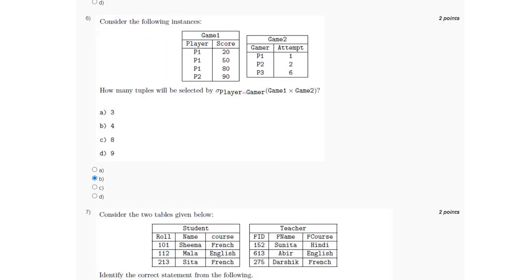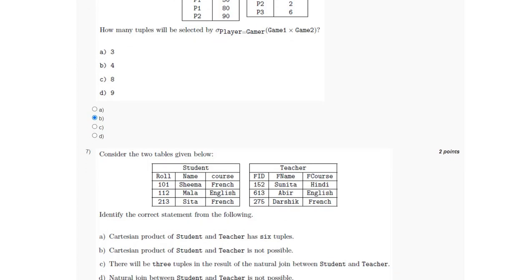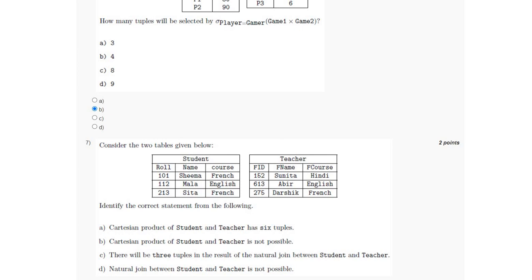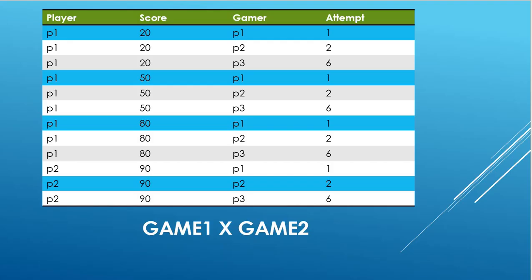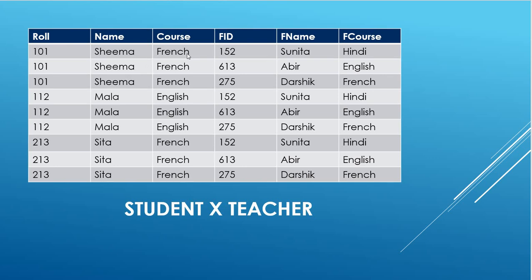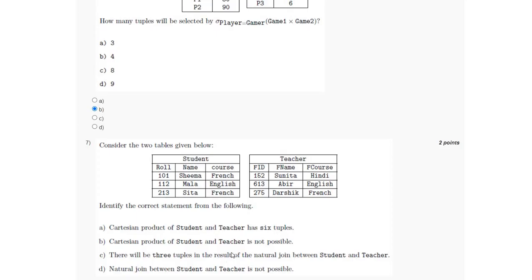For the next question, we have to identify the correct statement. The Cartesian product is possible, but the natural join between the student table and the teacher table is not possible because natural join occurs only when there is a common attribute between the two tables. The Cartesian product of student and teacher produces 9 tuples. Statement A is incorrect, B is also incorrect because the Cartesian product is possible. The correct answer is option D, because natural join is not possible.